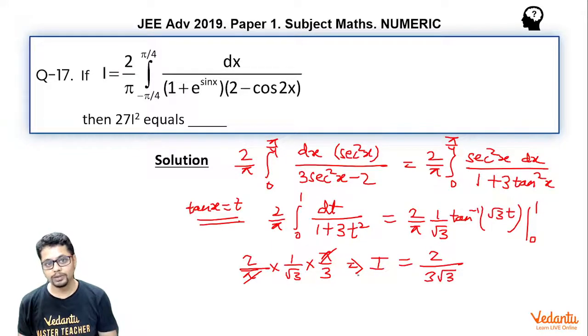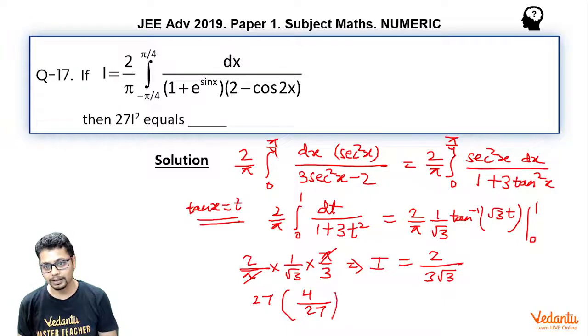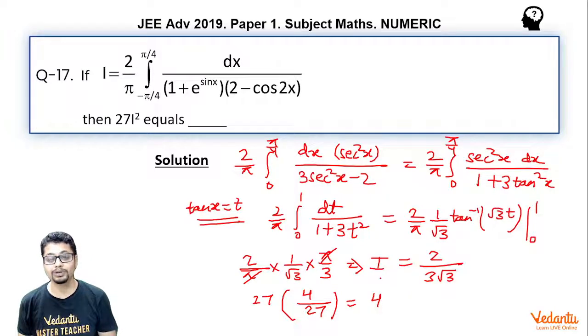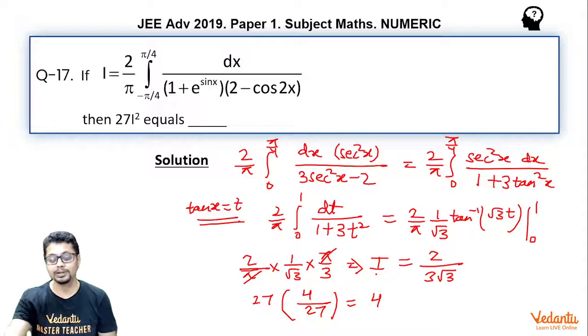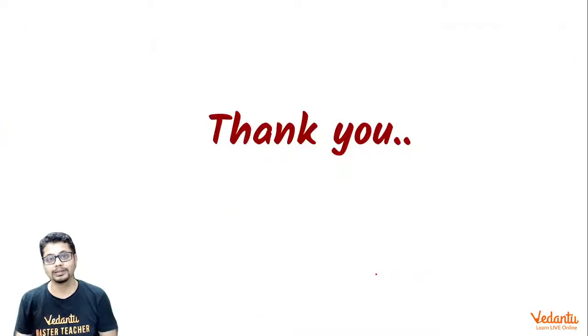So what about 27 times i²? 27 times i² is essentially 4. That is our answer — a simple question solved using the property of definite integration. Thanks for listening.